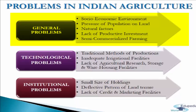The second general problem is pressure of population on land. Due to rapidly increasing population and lack of alternative employment opportunities, the size of holdings becomes smaller with steady subdivision and fragmentation of land. Consequently, there is a fall in per capita land holding. Moreover, the marginal productivity of labour is zero or even negative in agriculture.